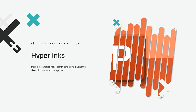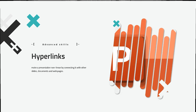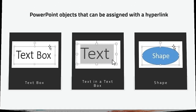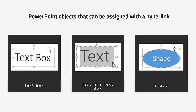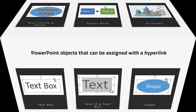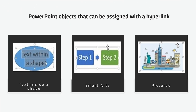There are different objects in Microsoft PowerPoint that we can attach a hyperlink to — there are actually six: a text box, text inside a text box, shapes present in Microsoft PowerPoint, text inside a shape, SmartArt, and pictures or graphics that we are going to use in the presentation.